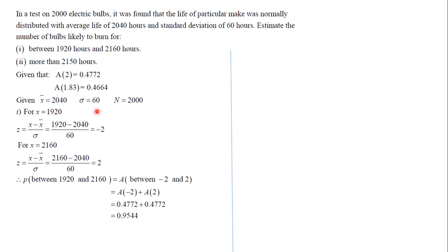We have mean, standard deviation, and the number of bulbs is 2000. Just substitute: for 1920 we'll get -2, and for 2160 we'll get +2. Between 1920 and 2160, add both frequencies because it's a symmetry case. This is 0.9544. Just multiply this by 2000.